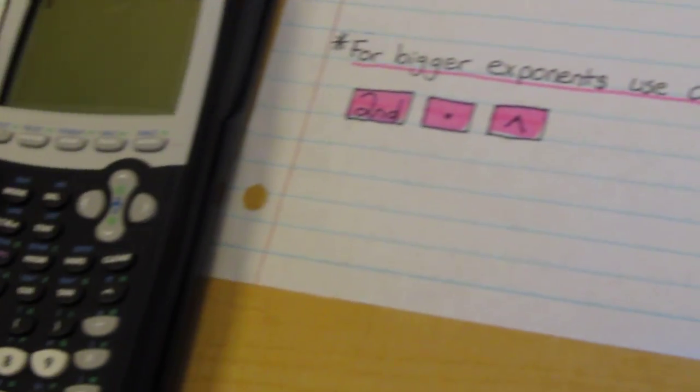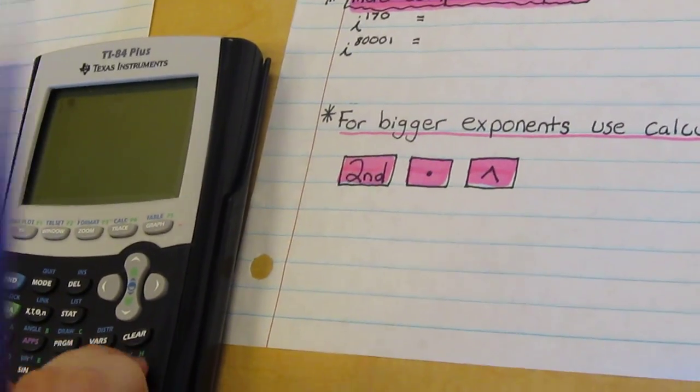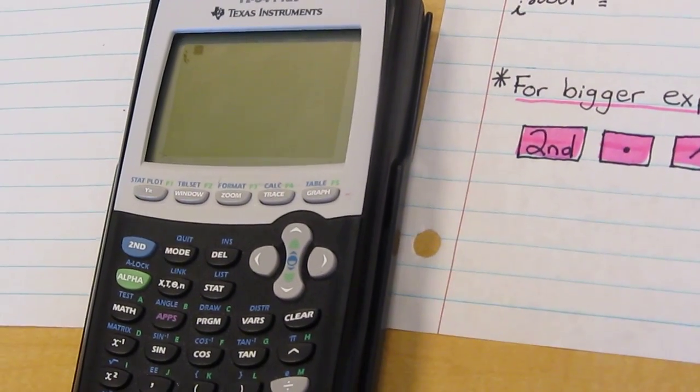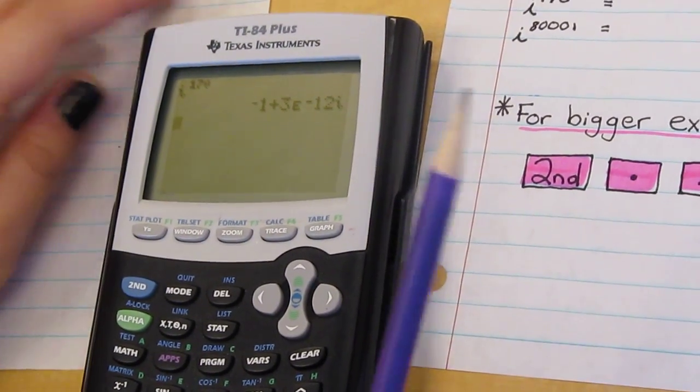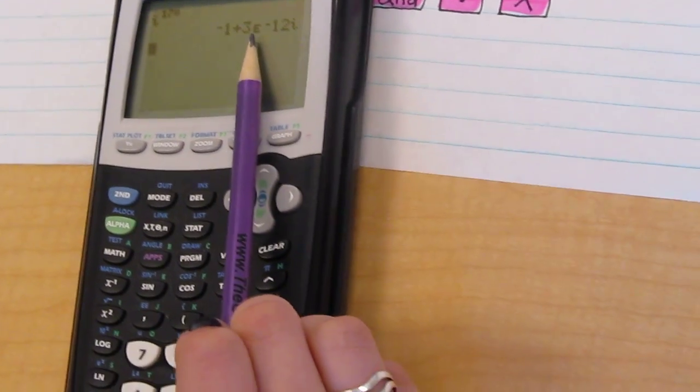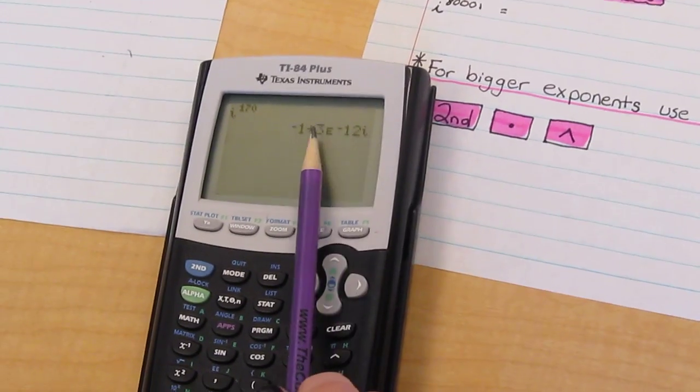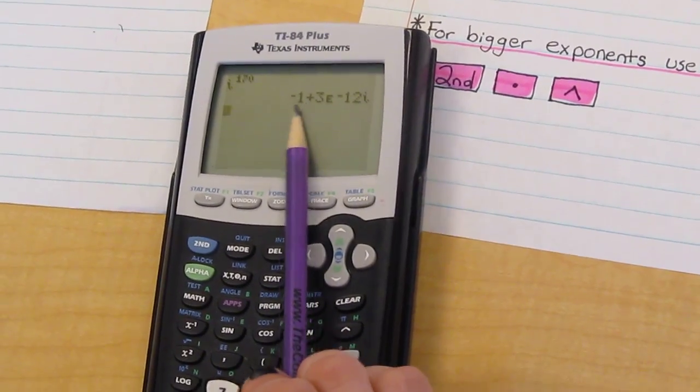So what we do is we use a calculator for bigger exponents. And to do this we hit the second button, the decimal button which has an i, the caret button, and then you type in whatever that number is. So in this case it's 170. So we type in 170 equals. Now it gives us this weird answer we have here. Well what you have to do is you have to look for the e. When you see the e you forget about everything that's in front of it and behind it, directly in front of it and directly behind it. So the answer for this one would be the negative one.